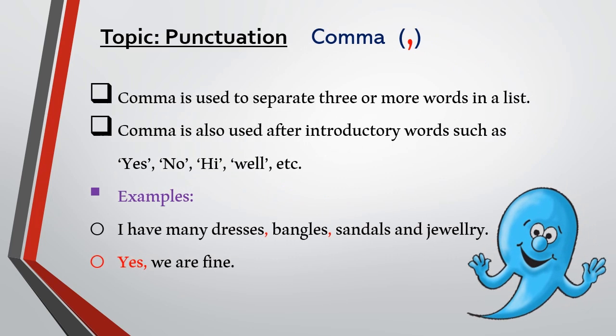The third punctuation is the comma. A comma is used to separate three or more words in a list. For example: 'I have many dresses, bangles, sandals, and jewelry.' A comma is also used after introductory words such as yes, no, hi, well, etc. For example: 'Yes, we are fine.'